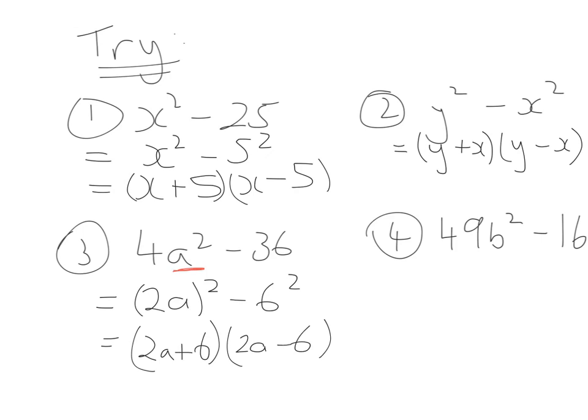And finally then, the same thing, we need to look to the numbers in front of the b squared. So we say, what squared gives us 49? That's going to be 7. So 7b is going to be all to be squared, minus, what's the square root of 16? That's 4 to be squared. We double brackets, 7b, 7b, 4 and 4, and a plus and a minus.